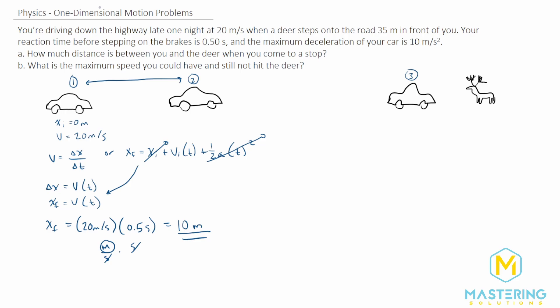Now for section 2 to 3, we need to figure out how far we travel while decelerating. We'll use V final squared equals V initial squared plus 2 times acceleration times delta X. We're using this equation because we don't know how long the braking section took — it's the only kinematic equation that contains all the variables we have without including time.